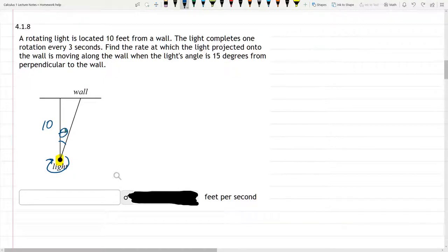That's telling us how theta is changing. So let's highlight that the light completes one rotation every 3 seconds. So that's dθ/dt equals, now it's not just 3, it's one rotation every 3 seconds. And I'm going to use degrees.